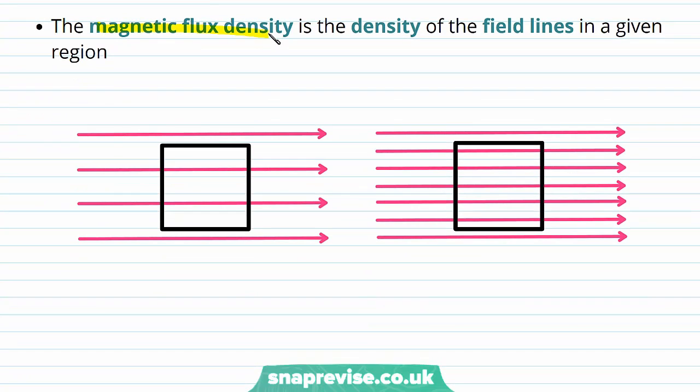We define the magnetic flux density as the density of the field lines in a given region. For example, in these two cases here, we have B1 and B2. And the more lines that there are through a certain region, the greater the magnetic flux density. And because B2 has more lines through this area in the black square, this means that the magnetic flux density B2 is greater than the magnetic flux density B1.